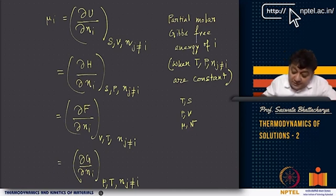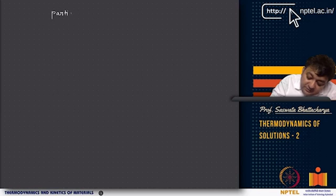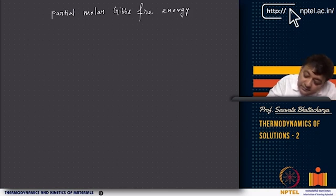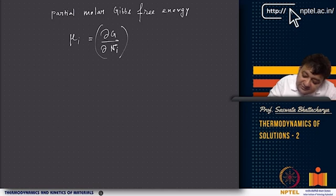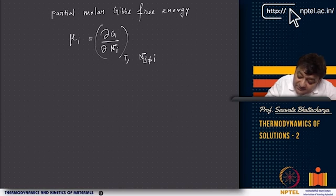The partial molar Gibbs free energy, also called the chemical potential, is defined as μi = ∂G/∂ni at constant temperature, pressure, and nj (j ≠ i). This is the change in total Gibbs free energy with the change in mole number of component i, keeping all other mole numbers constant.